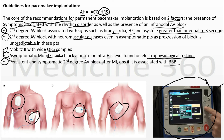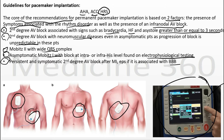This monitor helps us monitor the patient — it will show capture during pacing and provides other modalities to set the rate. For example, American Heart Association guidelines suggest initiating the heart rate from 60 and then moving to 70 or another rate as needed.